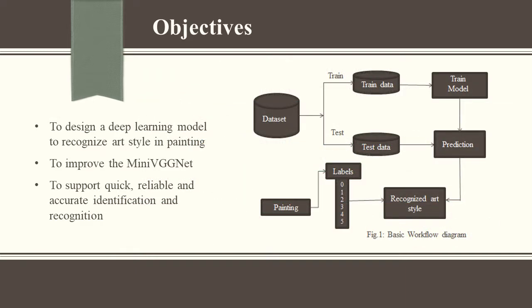Objectives: The aim is to design a deep learning model to recognize art style in paintings and support reliable, quick, and accurate identification and recognition. Furthermore, to improve the MiniVGNet model to provide great performance.